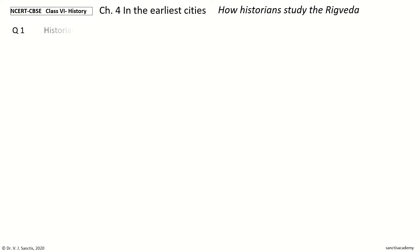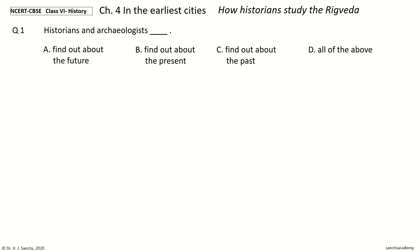Question 1. Historians and Archaeologists — the options are: find out about the future, find out about the present, find out about the past, or all of the above. Your time to choose. And the answer is: find out about the past. So, historians and archaeologists find out about the past.